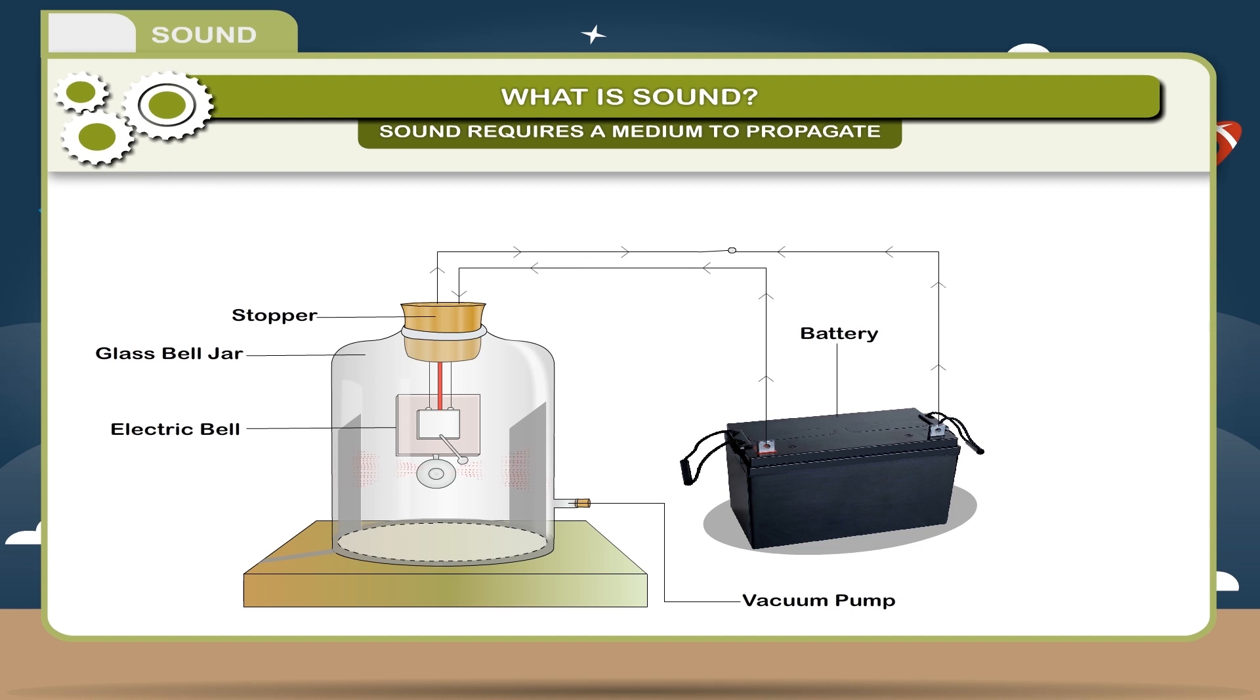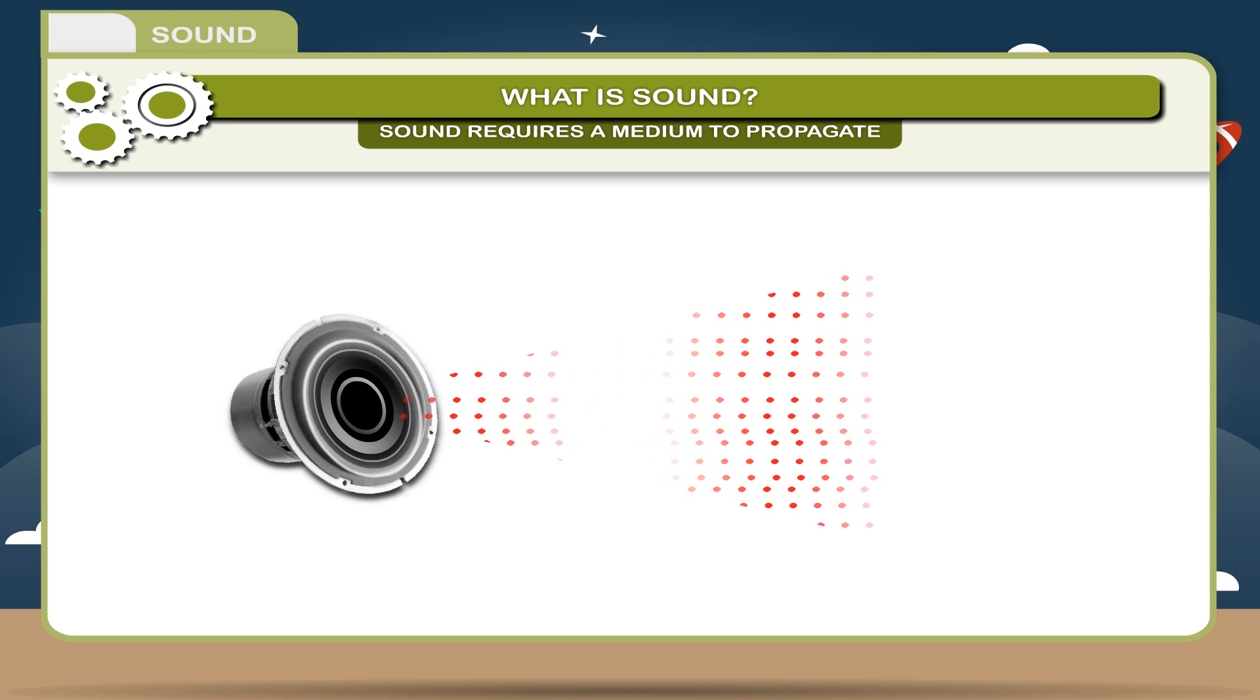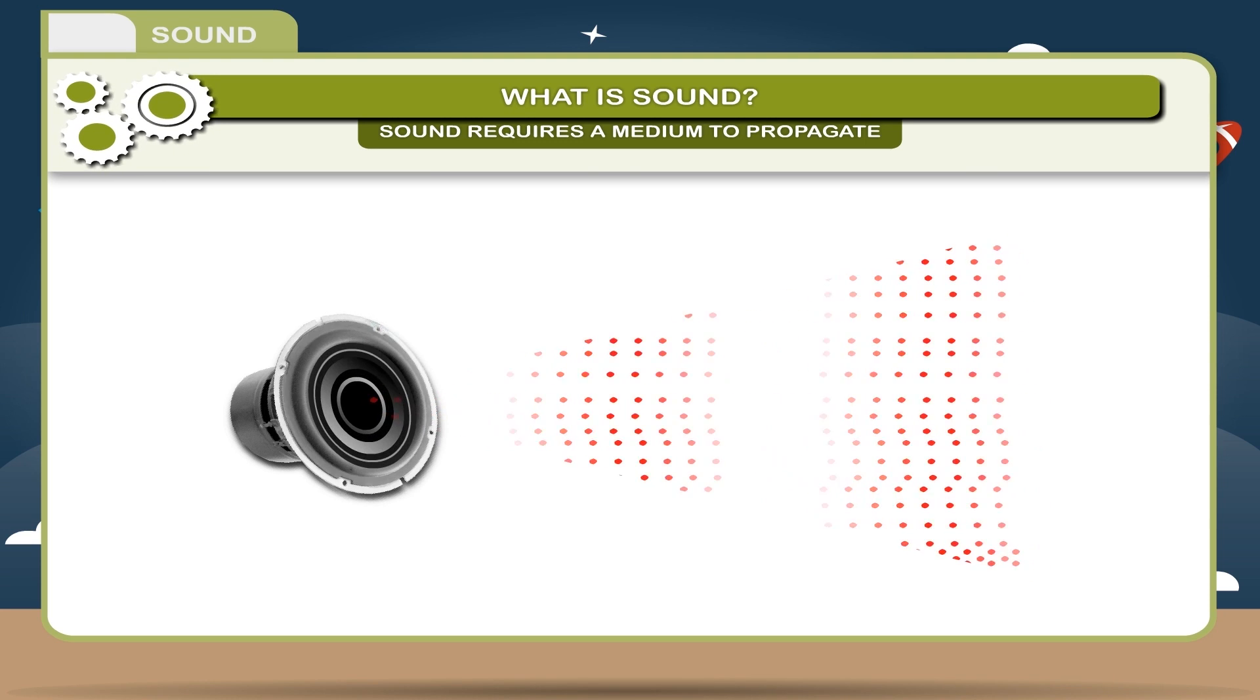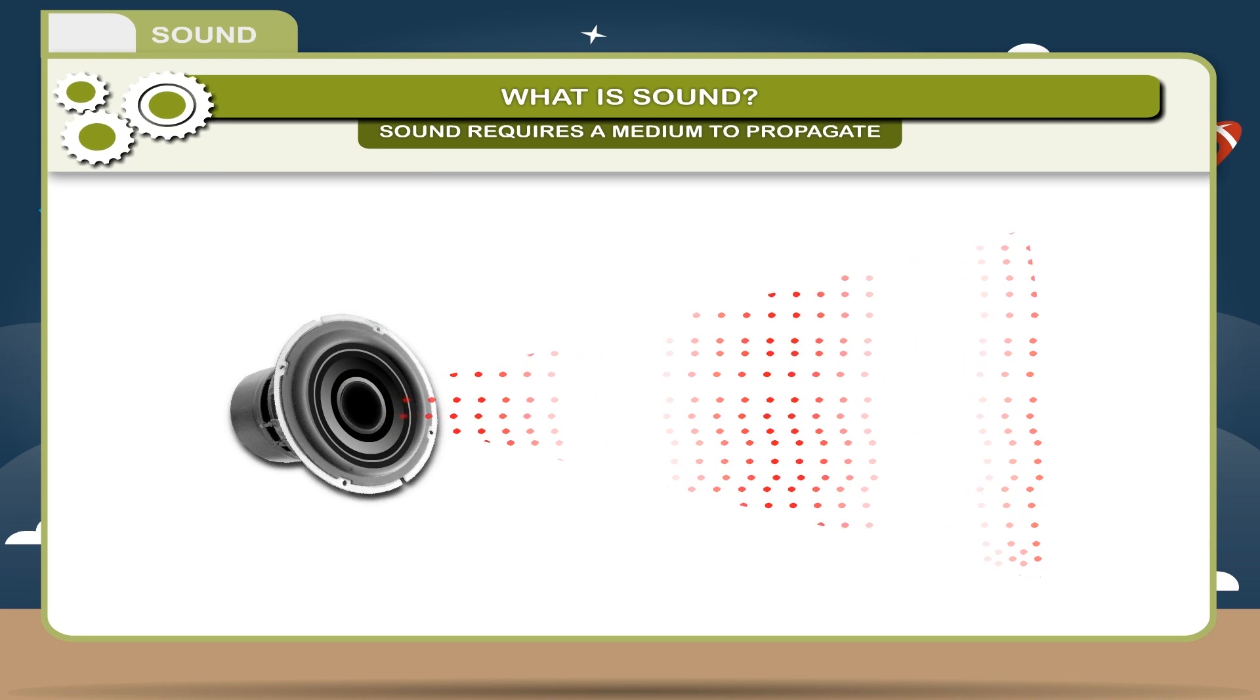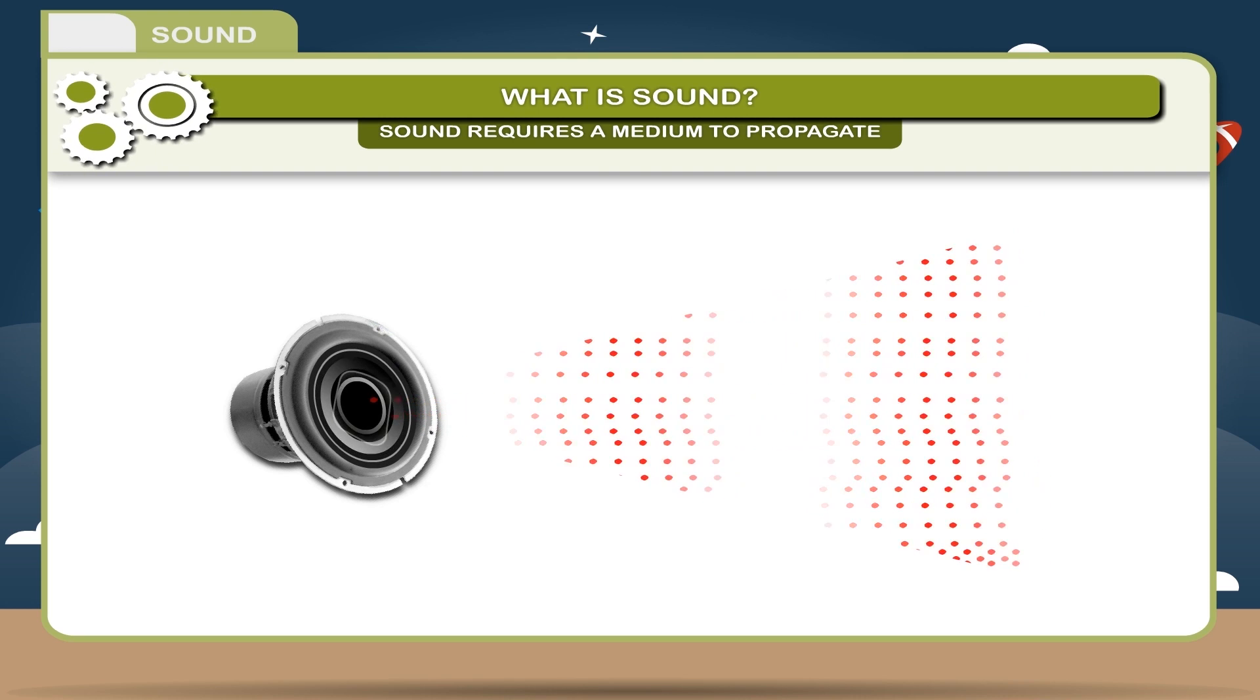Now, take the air out by a suction pump and make vacuum inside. Keep the cover tightly on the jar. Now, switch on the electric bell. No sound will be heard. Hence, we can conclude that the air particles were acting as a medium and they were helping the movement of sound energy.